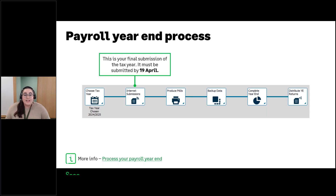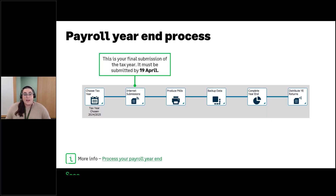The next step is the internet submission — this is that final submission we've been mentioning, and it needs to be submitted by the deadline of the 19th of April. It is an employer payment summary, or EPS, but it is different to the normal EPS you would send if you were reclaiming statutory parental payments, for example.